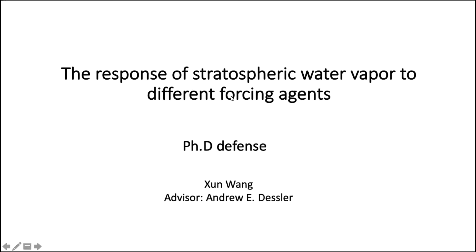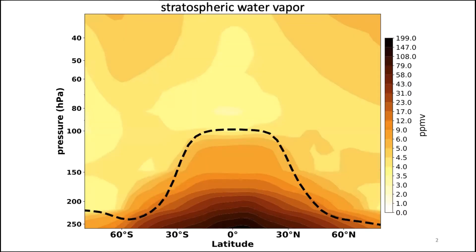Welcome to my PhD defense. Today let's talk about stratospheric water vapor and its response to different forcing agents. First, let's look at the zonal mean water vapor mixing ratio varying with latitude and pressure — the black dashed line is the tropopause. We can see a lot of water vapor in the troposphere below the tropopause and very little in the stratosphere. It's an important greenhouse gas that affects the radiative budget and regulates stratospheric ozone.